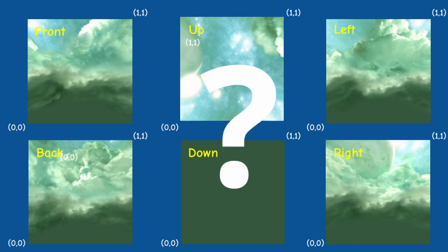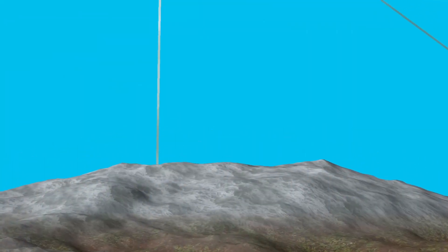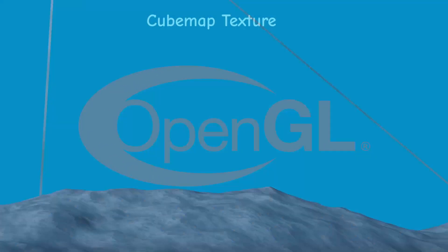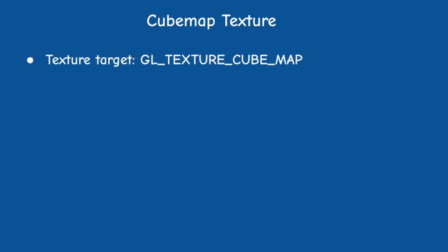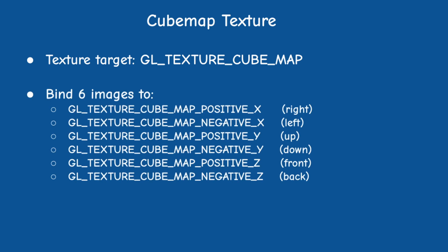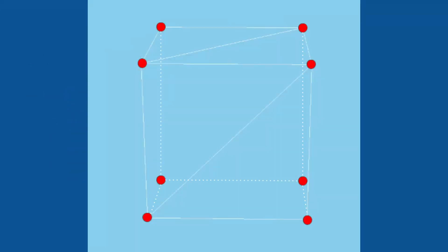How do we know which of the 6 faces to sample from? It's pretty obvious that as the camera turns around, the final frame will include pixels from several faces. The solution is provided by OpenGL. To render the skybox we use a special type of texture called the cube map, which contains 6 2D textures. Each texture is assigned to the positive or negative direction of the X, Y, and Z axes.